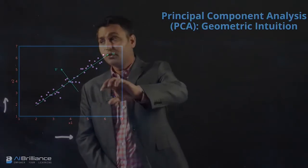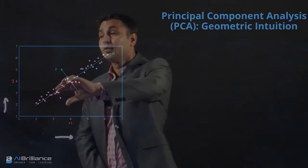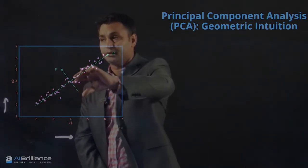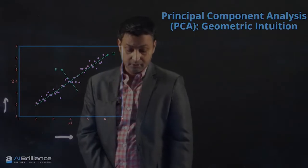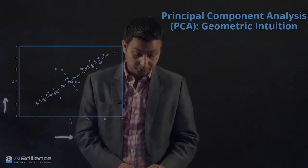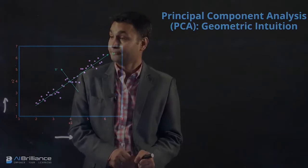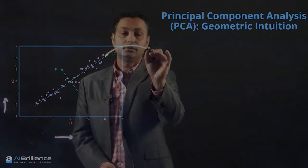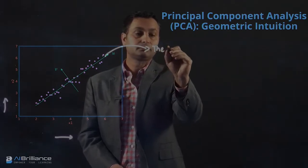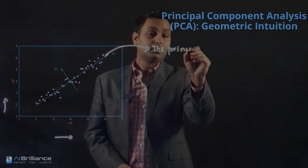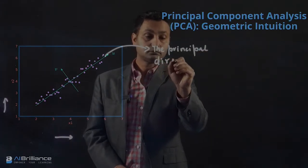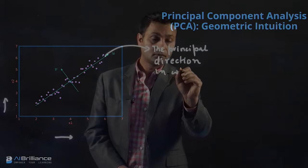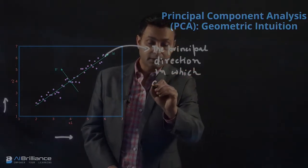First, if you look into this dataset, the most variance in the values of the data is along the u-axis. This is essentially the most important, the principal direction in which the data is varying.